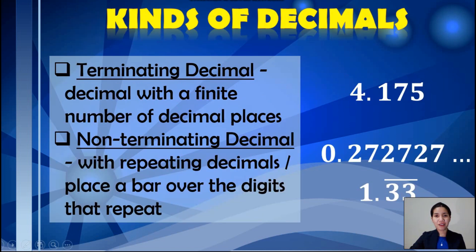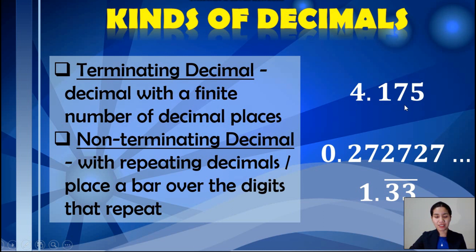Next, let's have the kinds of decimals. First, we have the terminating decimal. It is a decimal with a finite number of decimal places, just like the example here. As we can see, there are 3 decimal places, so this one is read as 4 and 175 thousandths. Second, we have the non-terminating decimal. It is a decimal with repeating decimals, or if you can see a decimal with a bar over the digits that repeat, then it is a non-terminating decimal.